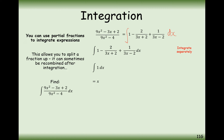For this term here, ideally we'd have a 3 on the top. So we need a constant multiplier of 2/3 at the front, giving 2/3 ln(3x plus 2).